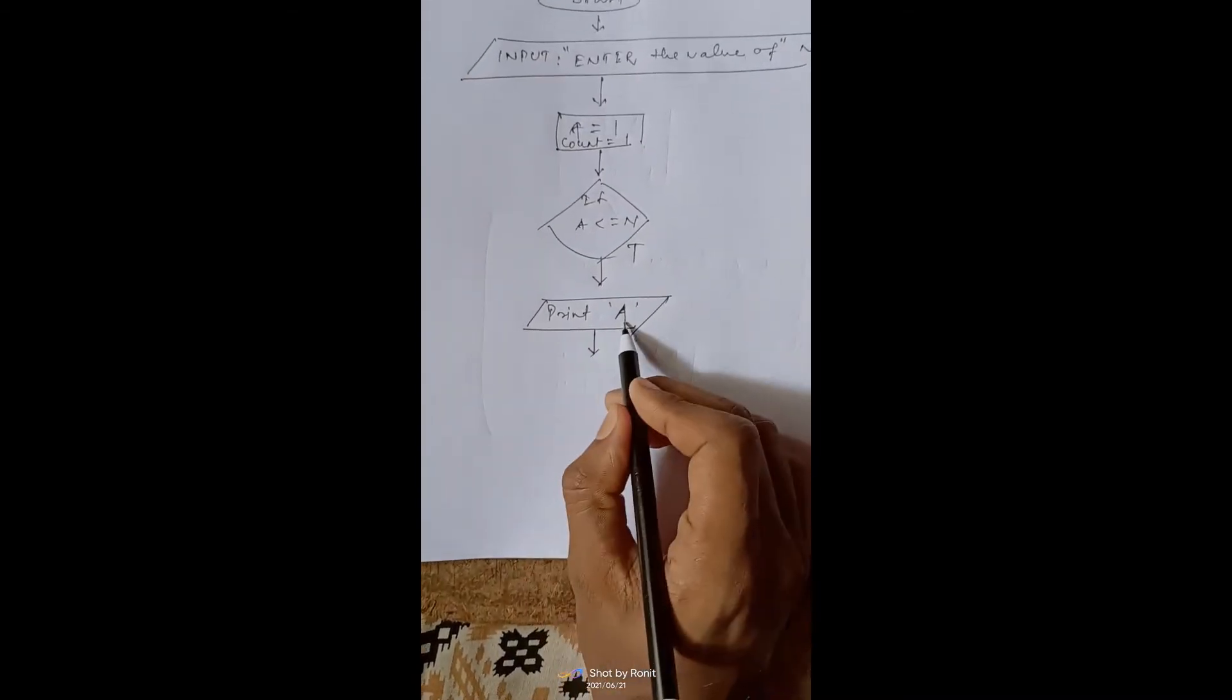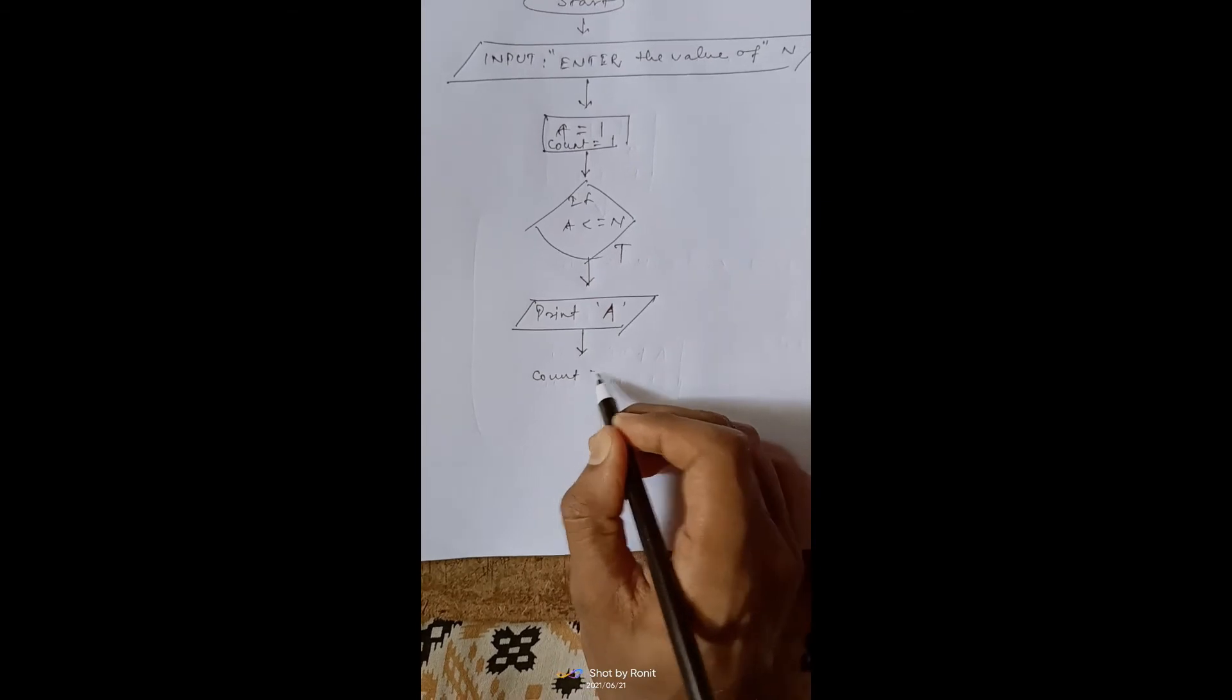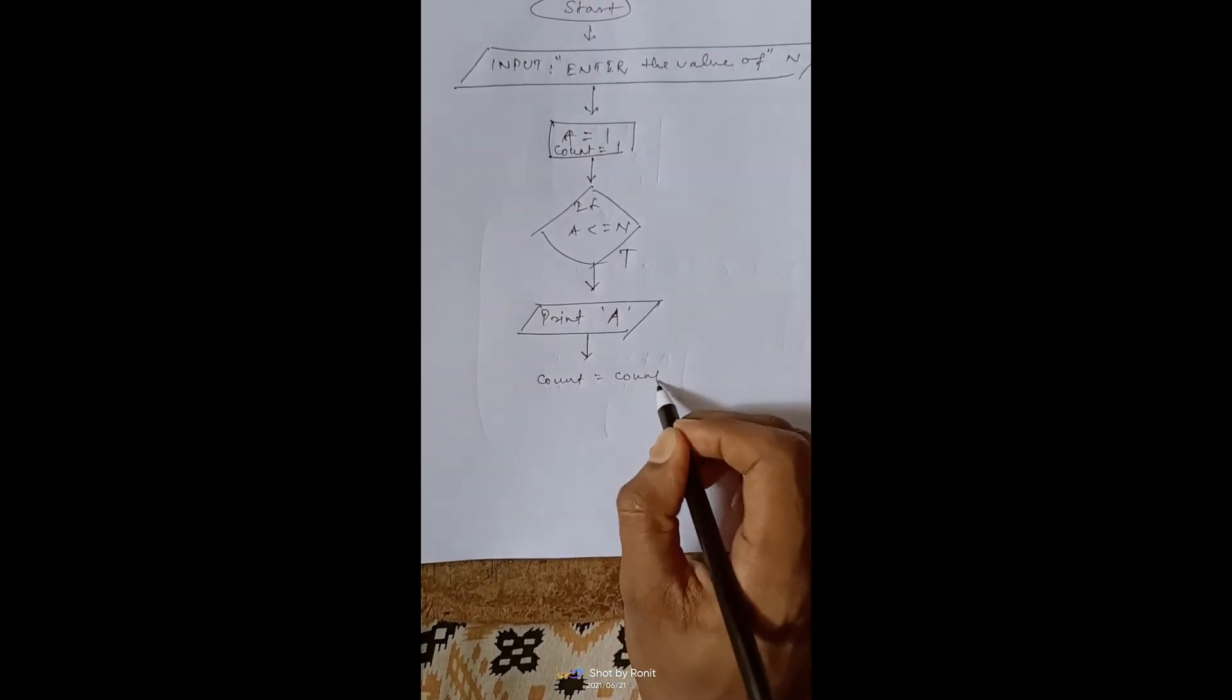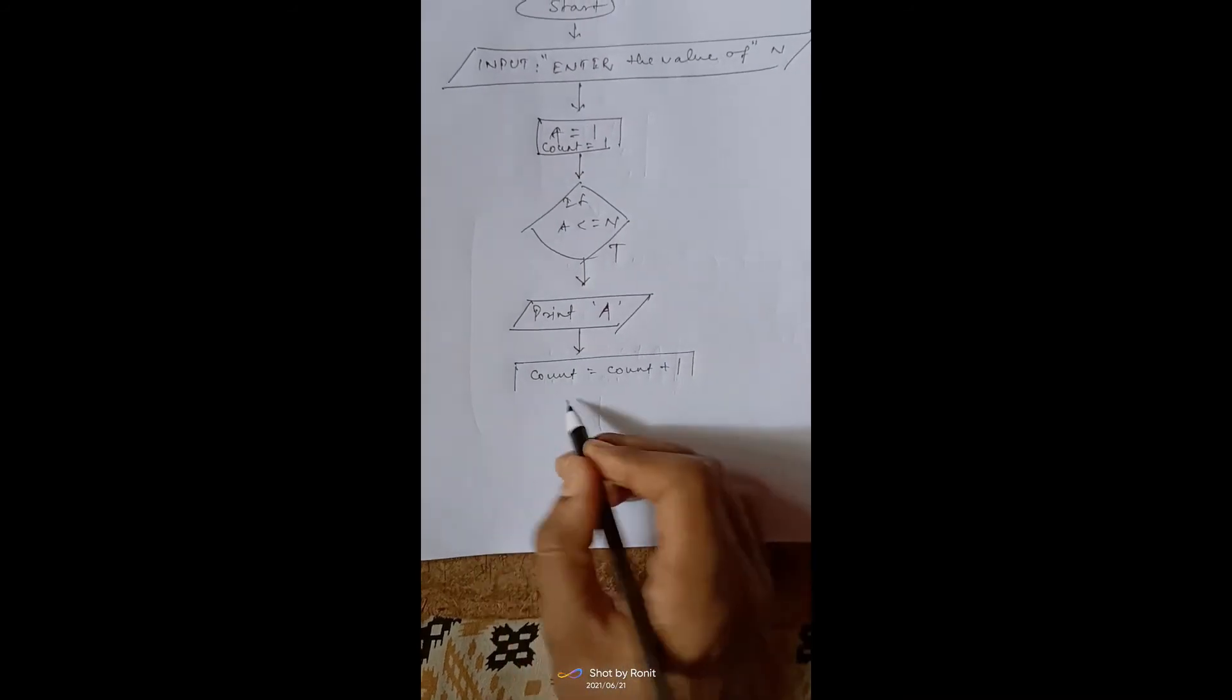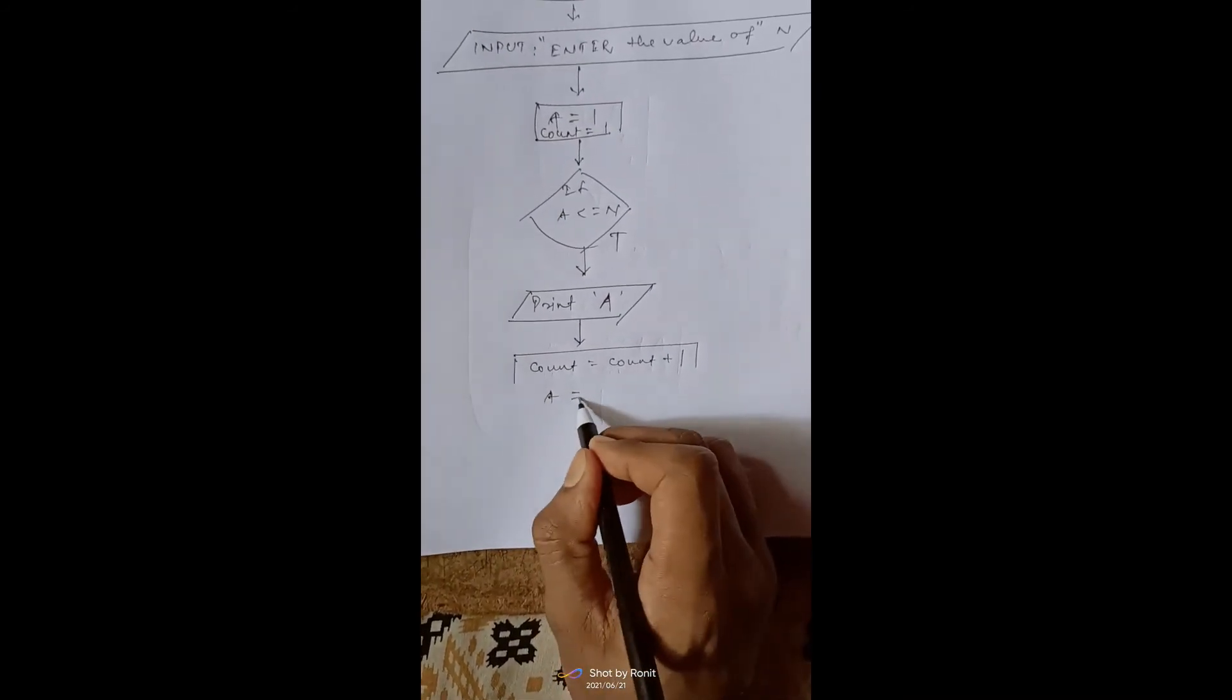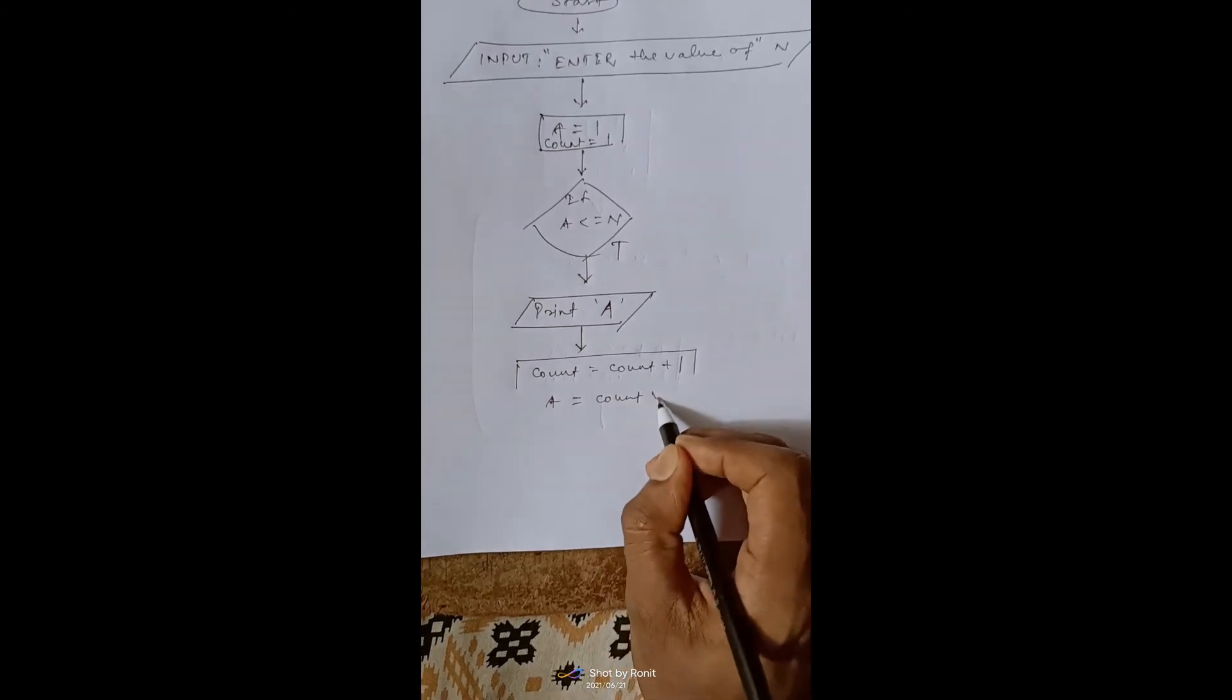Now, what will be done? After printing a, count will be increased. And a will be square of it.